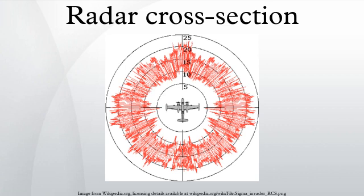Rather, by reflecting much of the radiation away or by absorbing it, the target achieves a smaller radar cross-section.